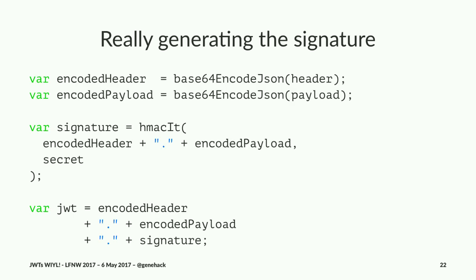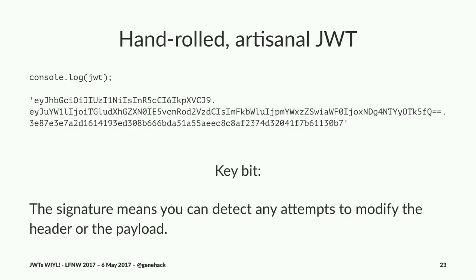Once you have all these things, here's how you generate the signature. You base64 encode the header, base64 encode the payload, generate the HMAC signature by taking the header, concatenating it with a dot and the payload, passing that into the HMAC function along with the secret. Then you concatenate together the header, payload, and signature with dots — and that gives you a JSON Web Token. In this case, a hand-rolled artisanal JSON Web Token.